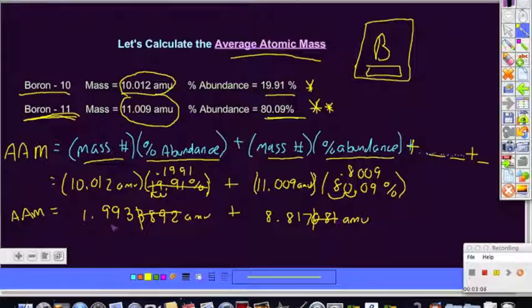Now when we add these together, remember to pay attention to how many numbers after the decimal. With sig fig rules, 1.993 plus 8.817 equals a final value of 10.810 amu's.